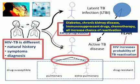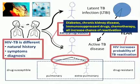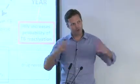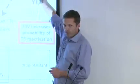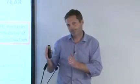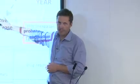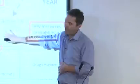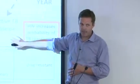The main problem in sub-Saharan Africa is HIV. HIV changes the way this all happens. I told you that 10% of people go from latent infection to active disease over their lifetime. If you have HIV infection, it's not 10% over 60 years — it's 10% every single year. You're almost inevitably going to develop active disease if you get infected.